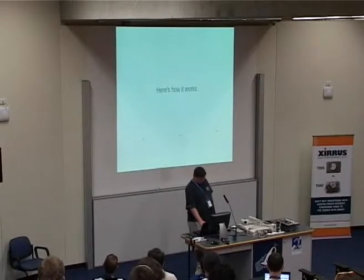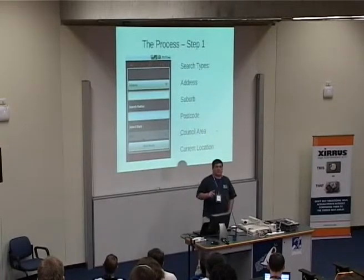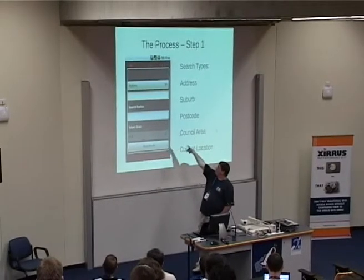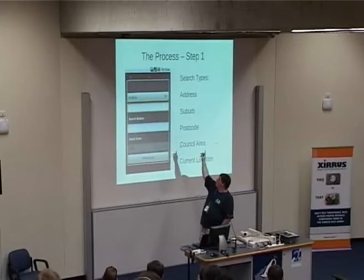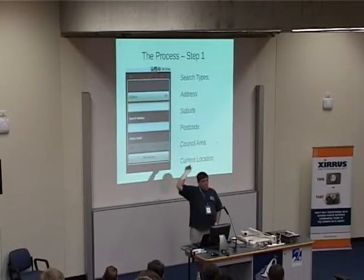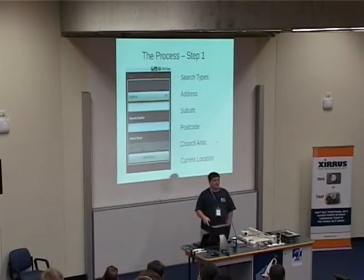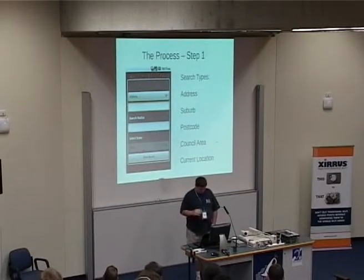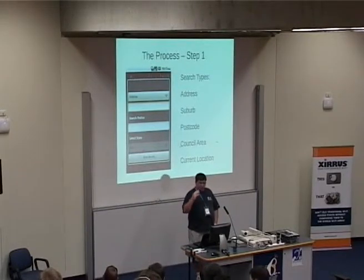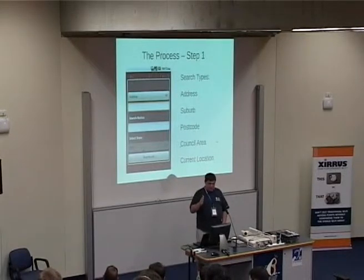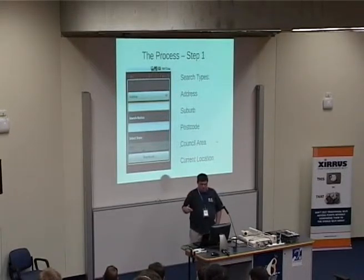Here's how it works — and keep in mind I am not a designer, so this is going to be ugly. You have a search form, and depending on what search is selected, the form actually changes to offer different things. You have five different search types provided by the Planning Alerts API: address, suburb, postcode, council area, and current location.